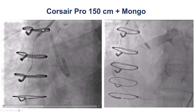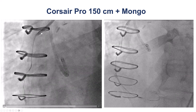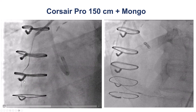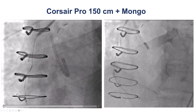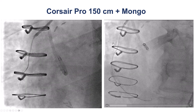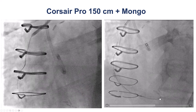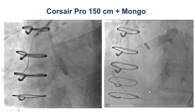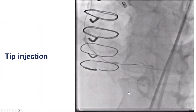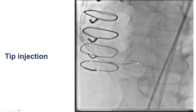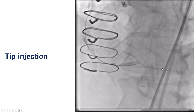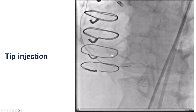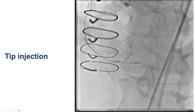We engaged the vein graft with a multipurpose guide. We used a Corsair Pro microcatheter and a Gladius Mongo wire, which is the standard setup for crossing occluded vein grafts. The Mongo actually went easily down to the PDA and then retrograde towards the distal right coronary artery. A tip injection after crossing the vein graft demonstrated the PDA and flow going all the way back to the bifurcation of the PDA and the posterolateral.